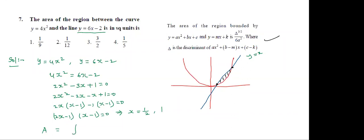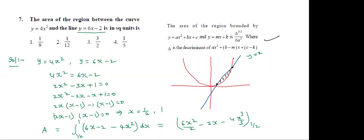Required area A = ∫ from 1/2 to 1 of (6x - 2 - 4x²) dx. Integrating: 6·x²/2 - 2x - 4x³/3, evaluated from 1/2 to 1. If in doubt about which is upper, take modulus of the result.